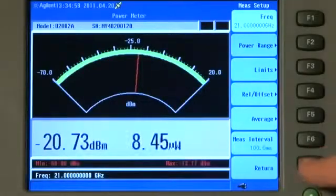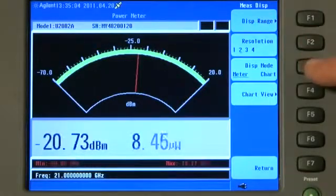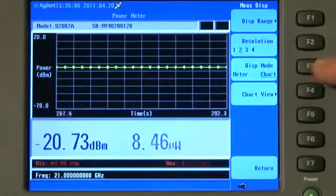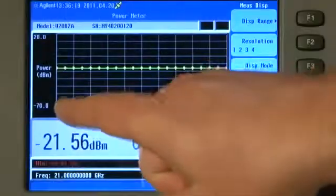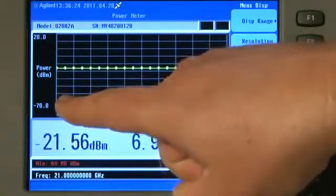But what's even better, if I press Return and press Meas Display, you'll see that we can change the Display Mode to a Chart Recorder. On the Chart Recorder Display, we have Time on the X-axis and Power in dBm on the Y-axis.